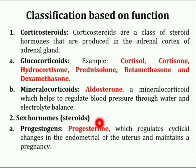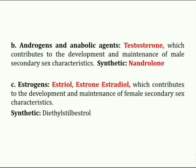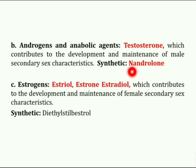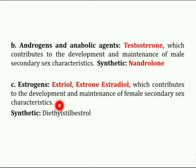Progesterone is a sex hormone which regulates cyclical changes in the endometrium of the uterus and maintains a pregnancy. Testosterone belongs to the category of androgens and anabolic agents, which contribute to the development and maintenance of male secondary sex characteristics. Nandrolone is a synthetic androgen and anabolic agent. Oestriol, oestrone, and estradiol are estrogens which contribute to the development and maintenance of female secondary sex characteristics.